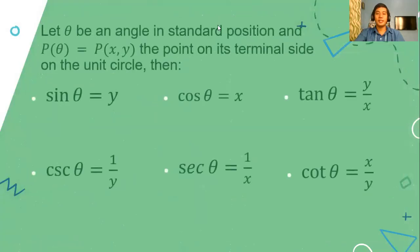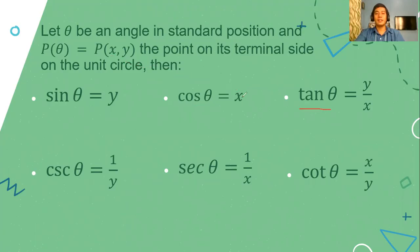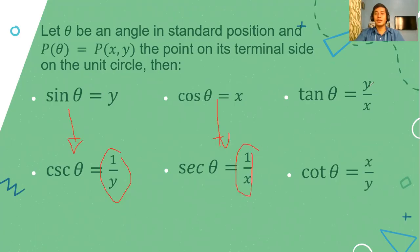Remember that the sine of a function is our y-value given the trigonometric point P(x, y), and the cosine function is our x-value. The tangent function is y divided by x. And of course, the corresponding reciprocal functions: the reciprocal of sine is 1 over y, the reciprocal of cosine is 1 over x, and the cotangent function is x divided by y.